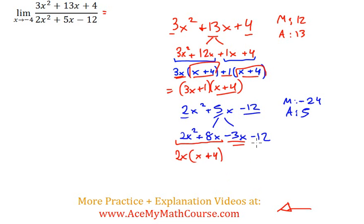Now between negative 3x and negative 12, we can factor out a negative 3. Negative 3x divided by negative 3 is x. Negative 12 divided by negative 3 is positive 4. Now what do we do? We write down the x plus 4 just once. Then we have just 2x minus 3.